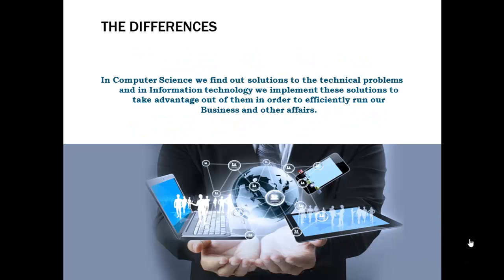To sum up: in computer science we actually develop software and hardware — it's all about software and hardware, their development, functionality, and interconnectivity. Information technology means the use of hardware, software, services, and supporting infrastructure to manage and deliver information using voice, data, and video. Examples of information technology include telephone and radio equipment and switches used for voice communication, traditional computer applications that include data storage and programs to input, process, and output data, and software and support for office automation systems such as word processing and spreadsheets.